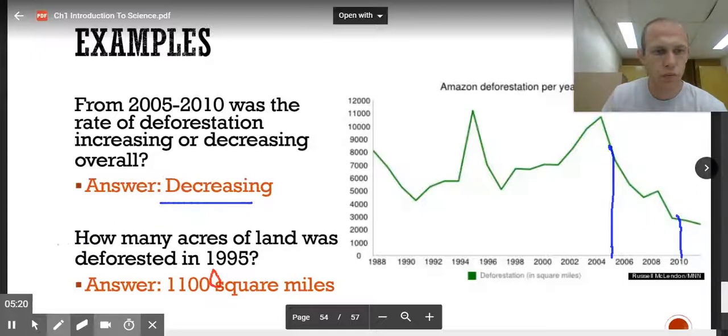How many acres of land was deforested in 1995? So 1995 would be right here. It looks like that's where that peak is. If I go over, it looks like 11,000. So I typed it wrong, but I fixed it with my little pen. 11,000 square miles.